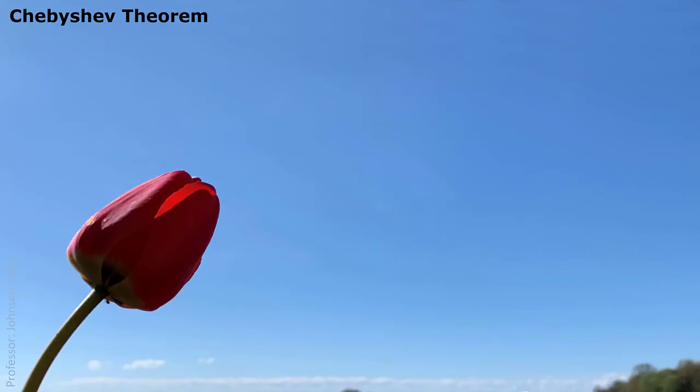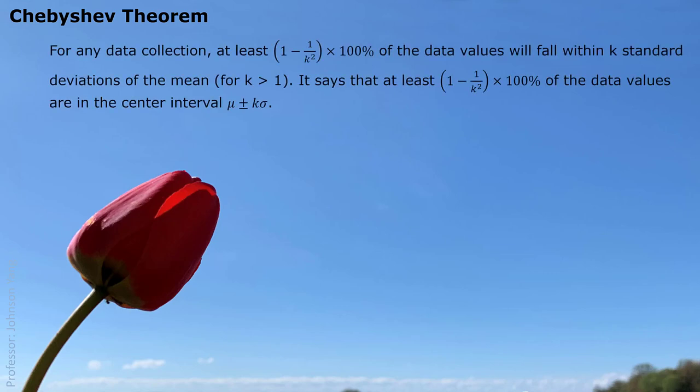Hello everyone. Here we talk about the Chebyshev theorem. Chebyshev theorem is also describing the data allocation, but this is for the general situation. We do not have any assumption about the distribution of our data collection. For any data collection, at least 1 minus 1 over k squared — this much percentage of data values will fall within, or we say will be within, k standard deviations. Here we only require k is greater than 1.